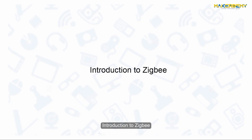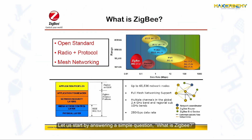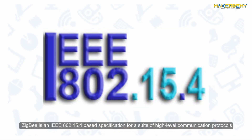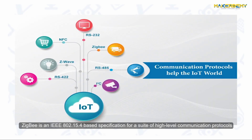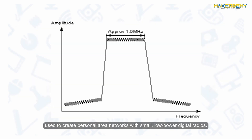Introduction to Zigbee. Let us start by answering a simple question: What is Zigbee? Zigbee is an IEEE 802.15.4 based specification for a suite of high-level communication protocols used to create personal area networks with small, low-power digital radios.